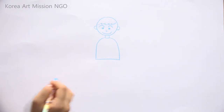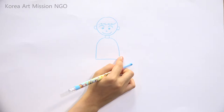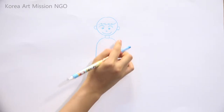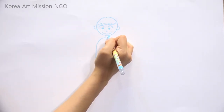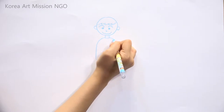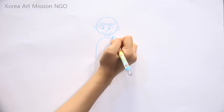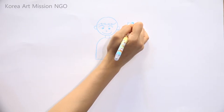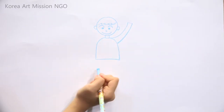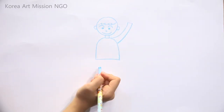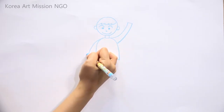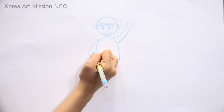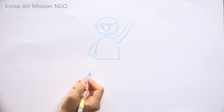Next, I'll draw some arms. Last time the girl stood up straight, but this time I want to draw the arms in another position. I'll try drawing one arm waving slightly from the neck to the shoulder, and I'll draw the other arm downwards like last time. The boy looks like he's waving his hand, doesn't he?